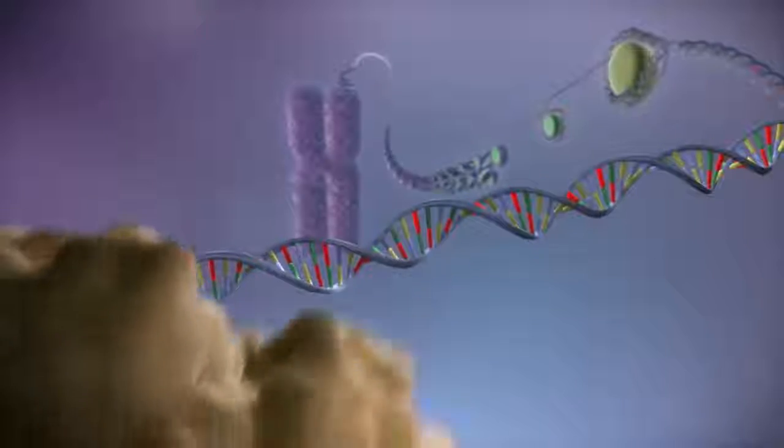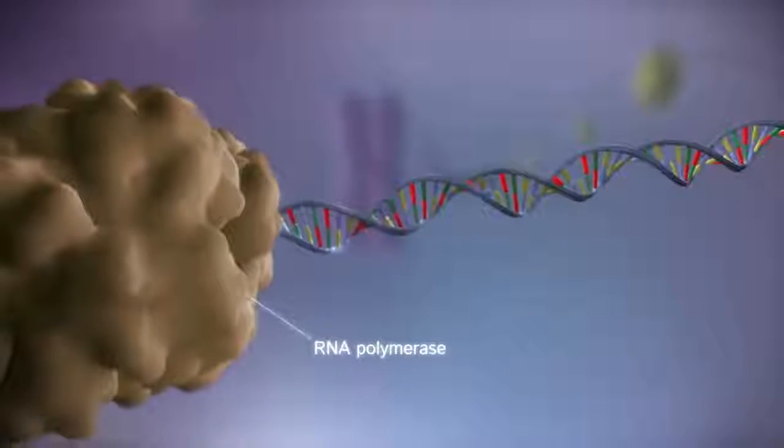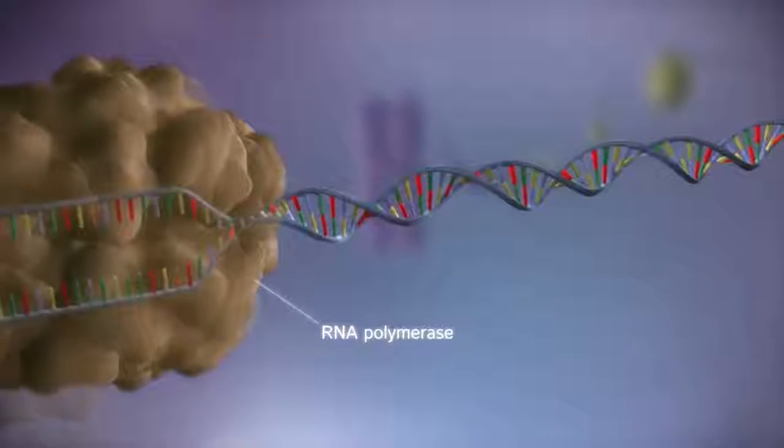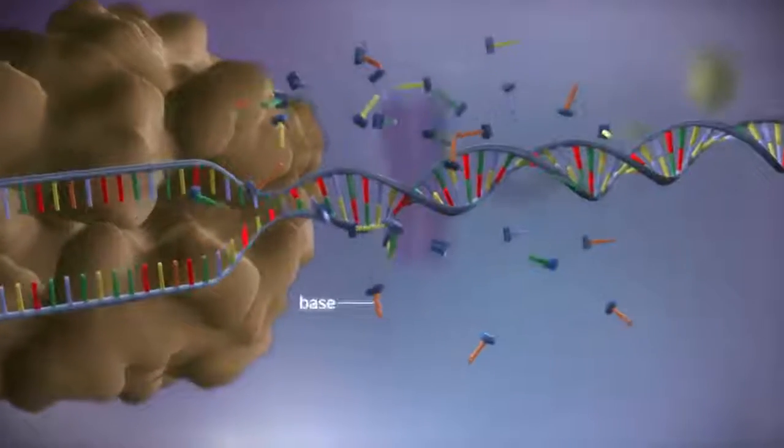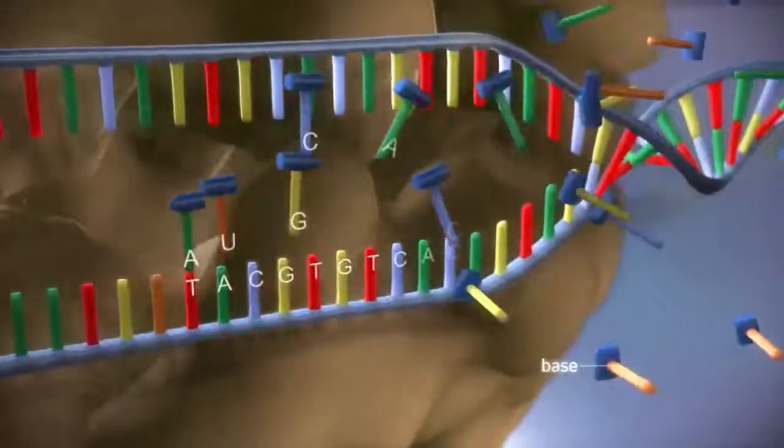When a gene is switched on, an enzyme called RNA polymerase attaches to the start of the gene. It moves along the DNA, making a strand of messenger RNA out of free bases in the nucleus.